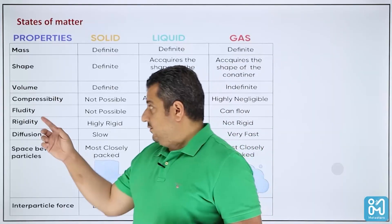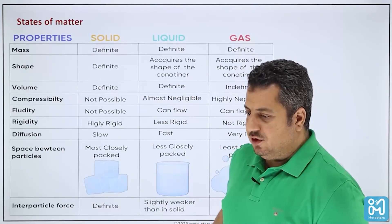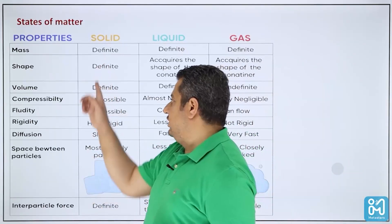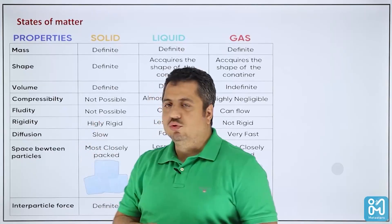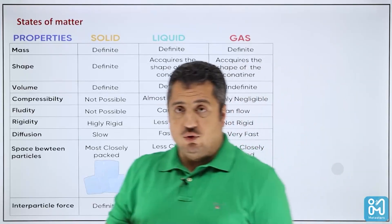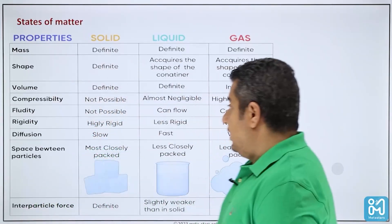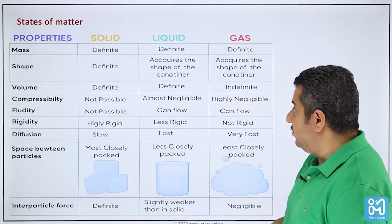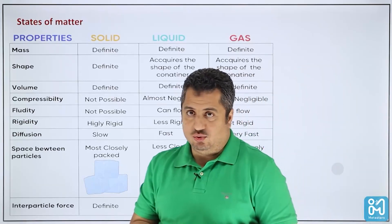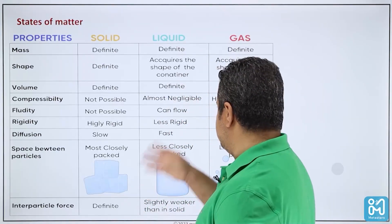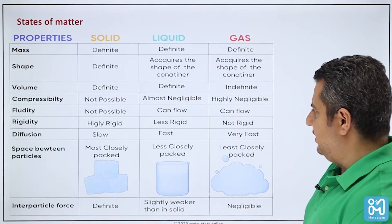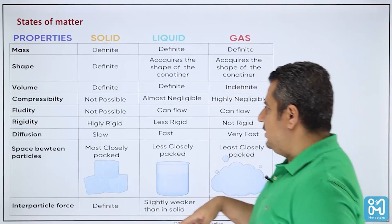Fluidity means that if you put something on the ground it will flow by itself. Solid will not flow, but liquid and gas will. Rigidity is highly defined for solids, less for liquids, and gas is not rigid at all. Diffusion is slow for solids, fast for liquids, and very fast for gases. I'll go through this quickly because we'll talk about each one separately.